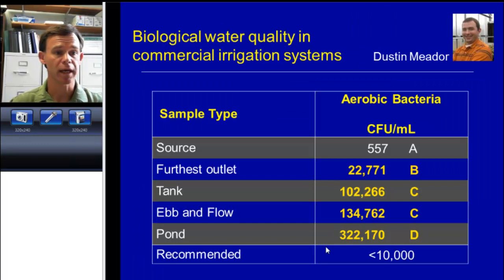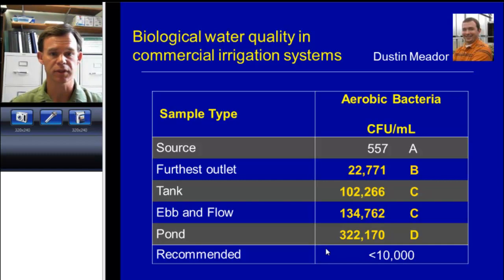Let's take an example of why this topic matters. This is research work that was done by a PhD student in my group, Dustin Metter. What Dustin did was he went into about 24 different nurseries and greenhouses around the United States and sampled the water quality at different points. One aspect of what he was sampling was this count of aerobic bacteria in colony forming units per milliliter. This is a count not really of pathogens, but it's an indicator of microbial load — how many microorganisms are living in the water.